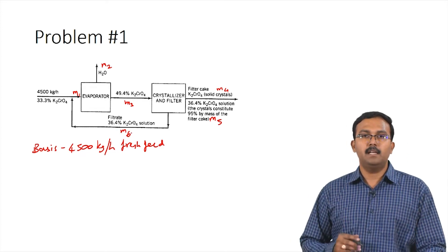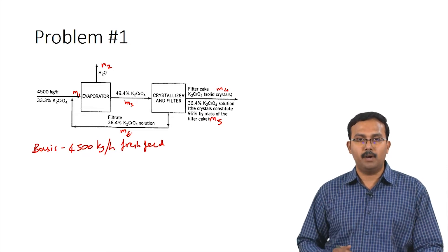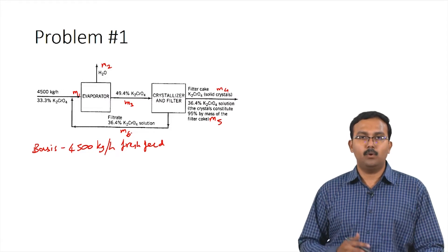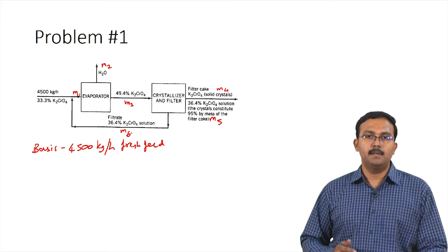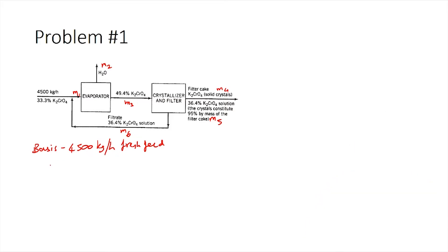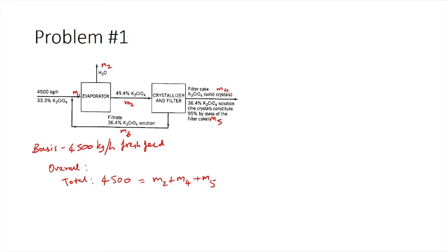Now that we have labeled the streams, let us choose our system and perform balances. We always start with the overall balance. Taking the overall system, we write the total mass balance: 4500 = M2 + M4 + M5, where M2 is water vapor leaving the evaporator, M4 is the potassium chromate crystals leaving the crystallizer and filter, and M5 is the potassium chromate solution accompanying the filter cake.